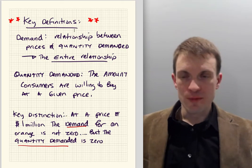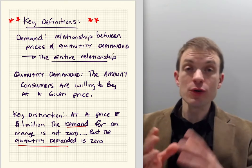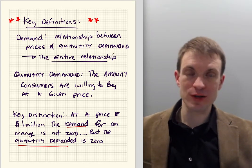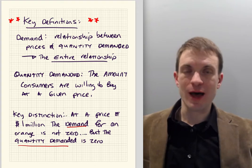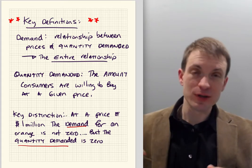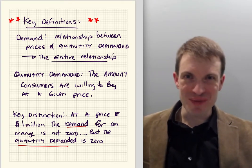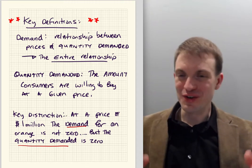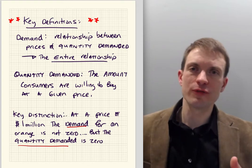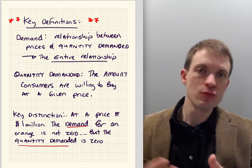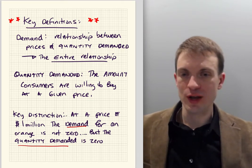By demand, we mean the entire relationship between prices and quantity demanded. This could be represented by a table, an equation, or a graph — typically a straight line in a principles course, though we'll always call it a curve. We draw a linear curve because we just want to focus on the intuition we can generate from changes, movements along, or shifts of this curve. We don't need to make it any fancier than the straight line.